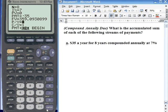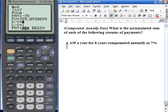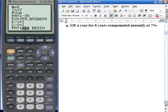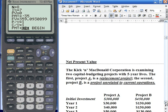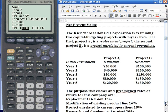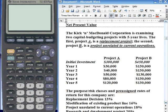Okay, so for the next problem, we're going to do a Net Present Value problem. Okay, so we're going to want to clear out the calculator. So we're starting with the problem, which is the Net Present Value for two projects for the Kick-In McDonald Corporation.